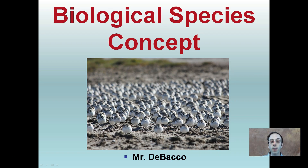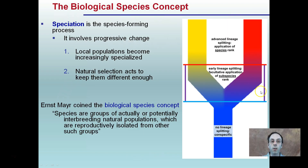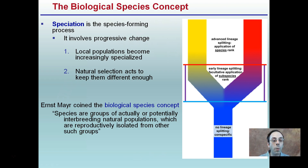Here we're going to look at the biological species concept. How do we get a group of individuals that's a subset of an original population, and why is that advantageous? Speciation is the process of species forming. It involves progressive change, and localized populations become increasingly specialized. Natural selection acts to keep them different enough, so we get this splitting effect. The biological species concept is defined as: species are groups of actually or potentially interbreeding natural populations which are reproductively isolated from one another.